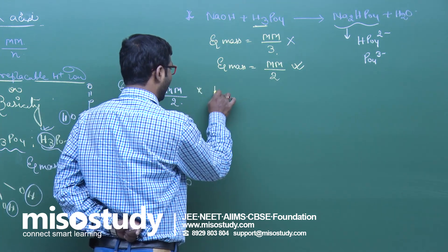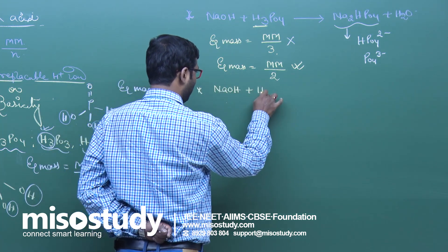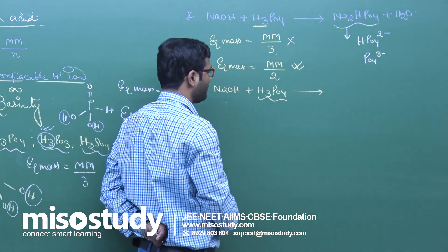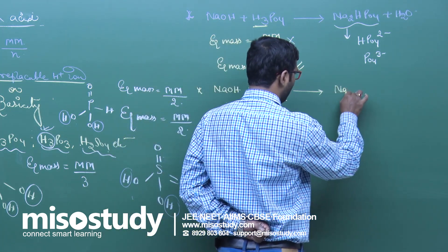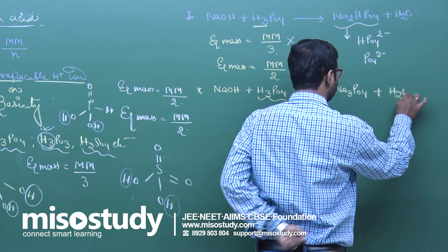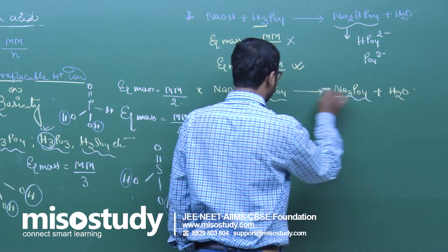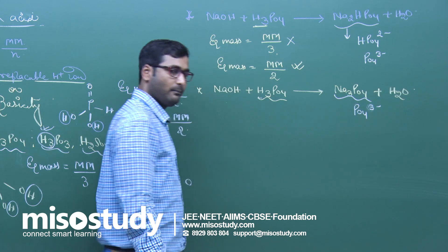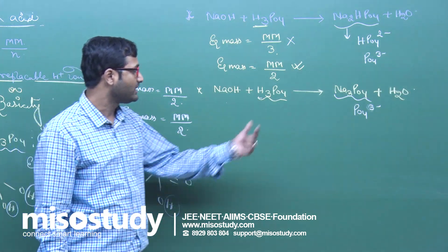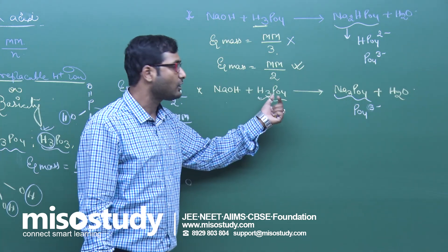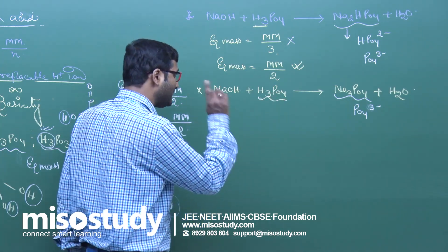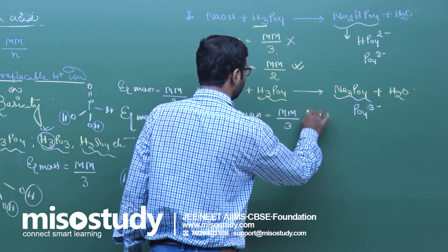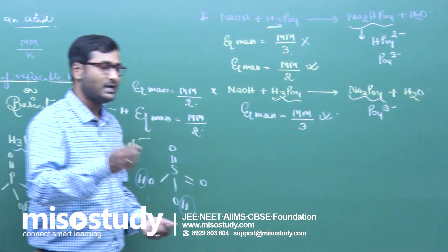Now consider another reaction: NaOH + H₃PO₄ → Na₃PO₄ + H₂O. Here H₃PO₄ converts into PO₄³⁻, meaning three H⁺ ions are released. So in this case, equivalent mass = molecular mass / 3. This confirms that equivalent mass varies as per the situation, but molecular mass always remains the same.